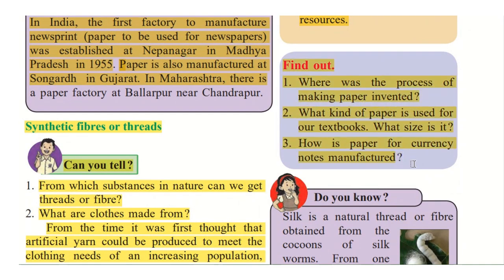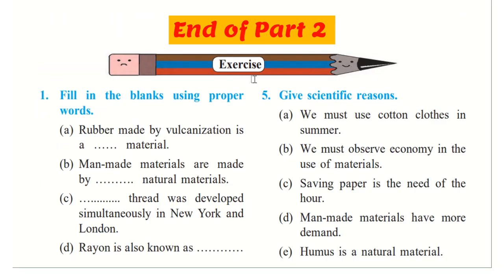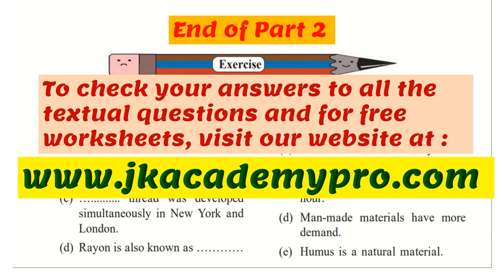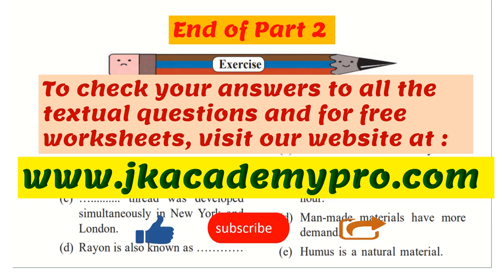Now here is a small activity for you: find out where the process of making paper was invented, and from the internet, what kind of paper is used for making textbooks, what different sizes exist, and how paper for currency notes is manufactured. Try to get more information and note it down in your notebook. Do solve the exercises given at the end of the lesson, and visit our website at www.jkacademypro.com. Do remember to like, share and subscribe. Bye-bye.